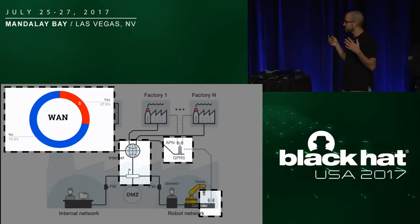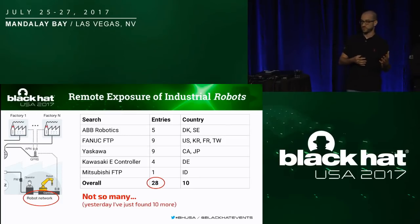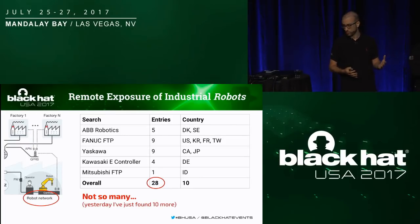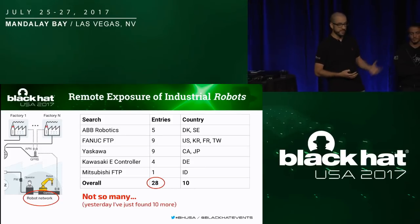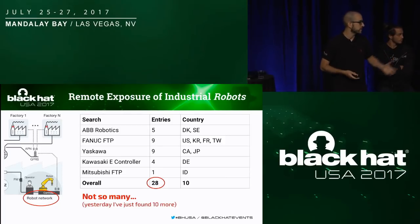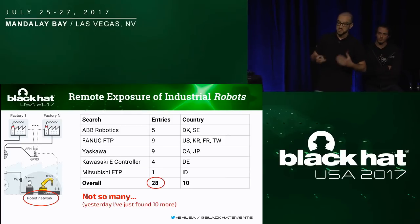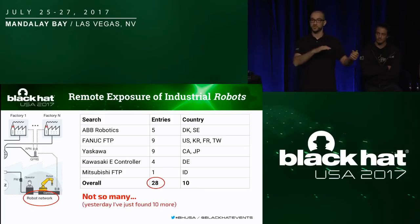Are we going to find any robots if we simply scan the internet? The results of a Shodan scan reflect what we expected. Fortunately, we haven't found a lot of exposed robots. Searching for the top five brands, we found around 25 to 35 exposed robots — we monitored these searches for about a year and numbers flowed between those values.